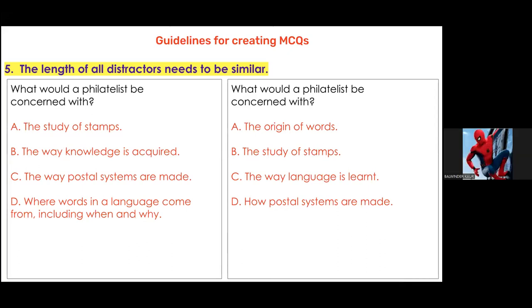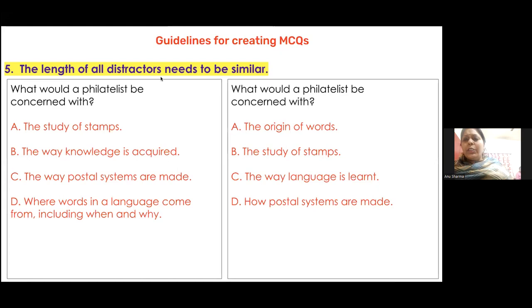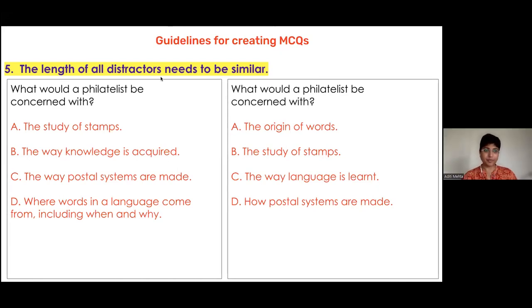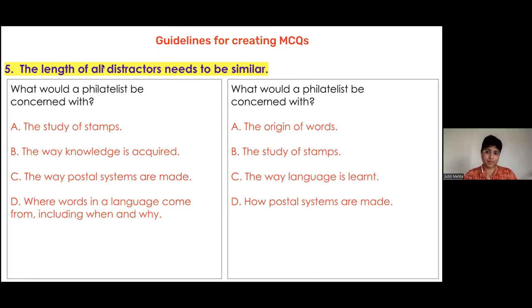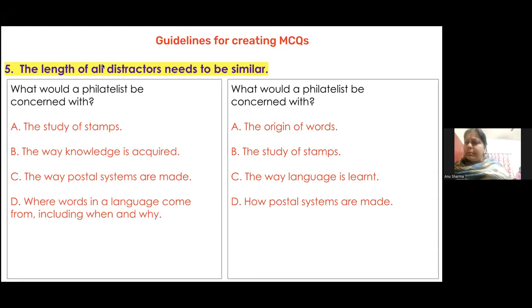There is a question from Anu ma'am: the distractors for the philatelist question should be rewritten with similar length — for example, 'original words,' 'study of stamps,' 'how language is learned,' 'how postal systems are made' — as phrases, with a lowercase first letter and no full stop after each.